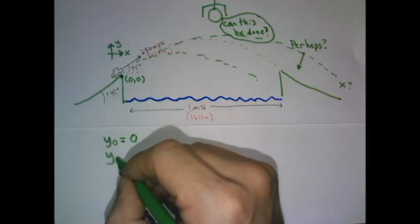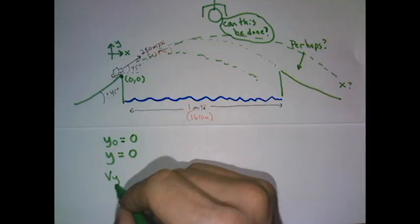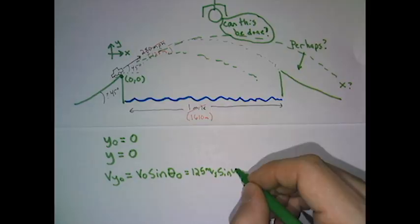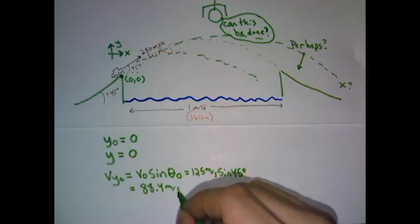His y launch velocity is a component or a piece of that 125 meters per second. So multiply 125 by the sine, because we're dealing with the y direction now, at 45 degrees. And we get 88.4. Now, the reason we get the same answer as the x is because 45 perfectly or evenly splits the x and y.